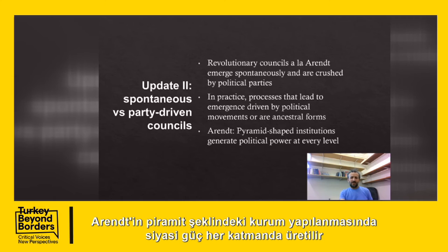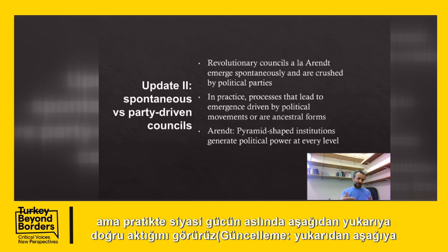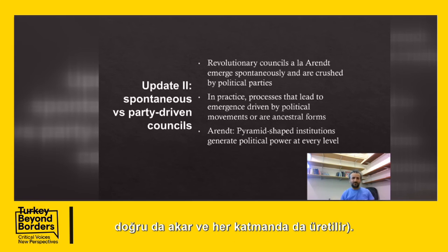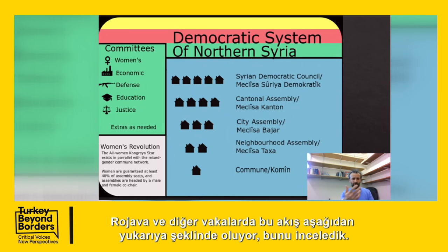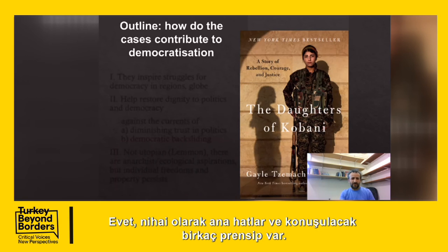In Arendt's pyramid-shaped institutions political power is generated at every layer, but in practice we can see that political power actually runs from bottom to top. In a representative system power goes from top to down, whereas in the case of Rojava and other cases it goes from bottom to up — we have seen this.